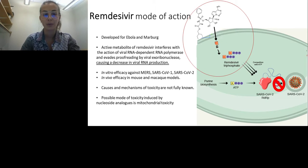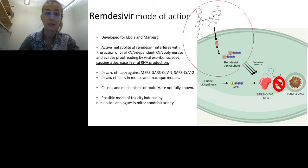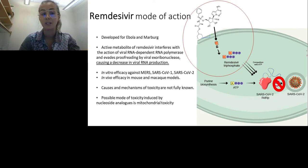Remdesivir is a pre-existing drug developed for Ebola and Marburg. It is a nucleoside analog, and the way it acts: when it enters the cell, it first transforms into its active metabolite, then it interferes with viral RNA-dependent RNA polymerase. It competes with ATP and gets integrated into the viral RNA, causing evasion of proofreading by viral exoribonuclease and a decrease in viral RNA production. This drug has shown in vitro efficacy against SARS-CoV-1 and SARS-CoV-2, as well as in vivo efficacy in mouse and macaque models.